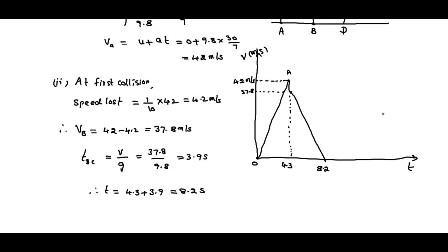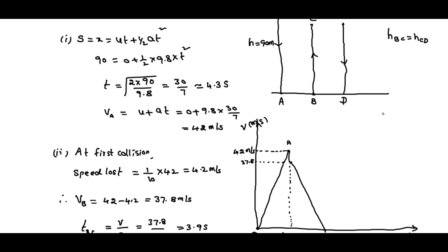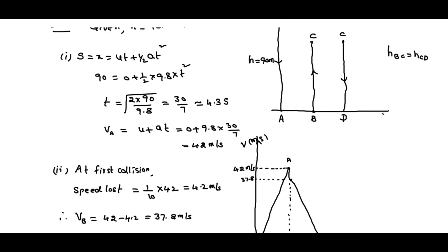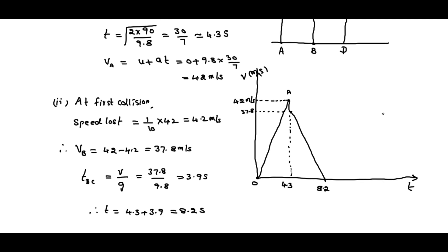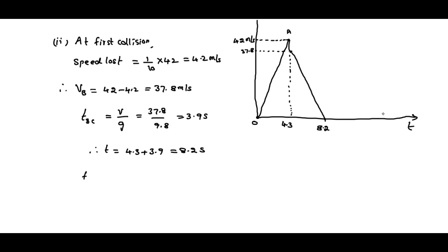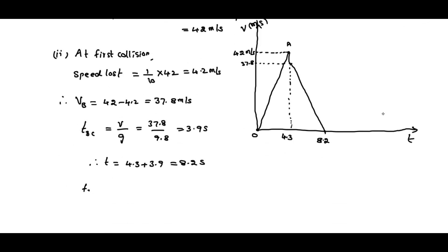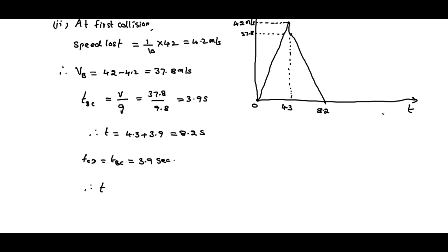And again, the speed at C will be 0. Again, falling from C to D, it will take the same time, 3.9 seconds itself. The time between C to D equals time between B to C, which is 3.9 seconds only. Therefore, the total time taken from O to D equals 4.3 plus 3.9 plus 3.9, so this total time will be 12.1 seconds.